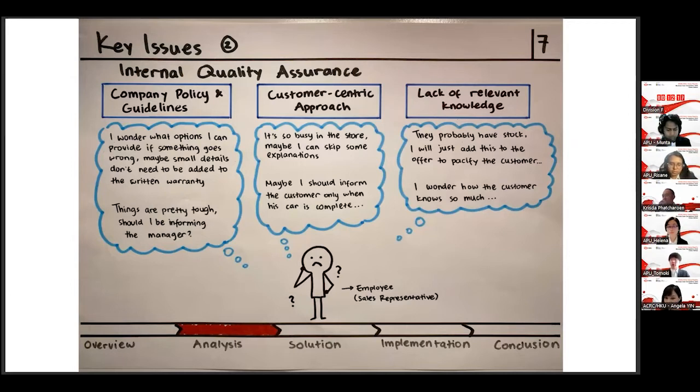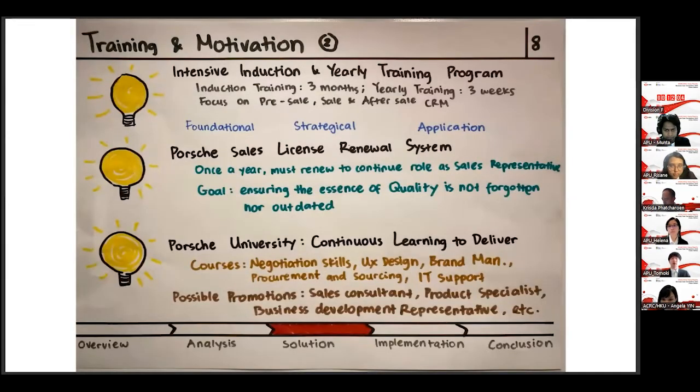Were there troubles with communication between the dealership and the manufacturer? Or was there previous training David received which was lackluster? To mitigate this problem, we introduced three proposals. Firstly, the intensive induction and annual training program. The first initial training will be three months. Then, employees will have yearly trainings which will last for three weeks. The program will be split into three parts, foundational, strategical, and application.